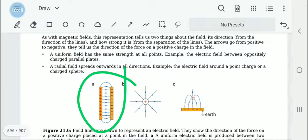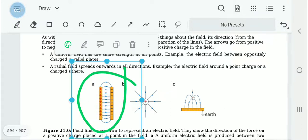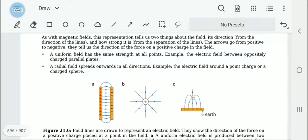In radial fields, they spread out in every direction, and the further away you go, the lesser the strength of the field. When there is a point charge and something is being attracted, like in diagram C, it will get attracted towards the opposite charge.